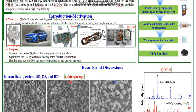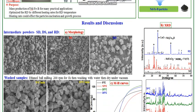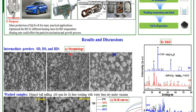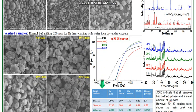We modified the existing RD method by conducting experiments using different heating rates to reach the RD temperature. This is because the heating rate can affect particle nucleation and growth mechanisms. From that perspective, we carried out this work using different heating rates from 5 to 30 degrees C per minute.